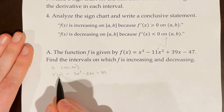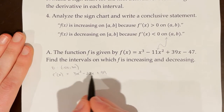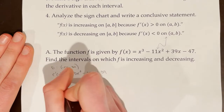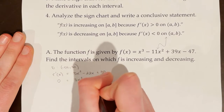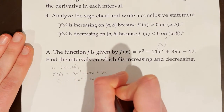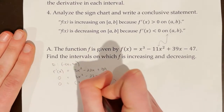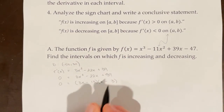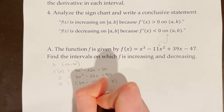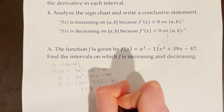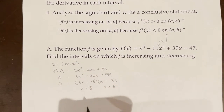Critical points can occur when f prime of x is 0 or undefined. There aren't any values of x that will make f prime of x undefined, but if we set f prime of x equal to 0, we have 0 equals 3x squared minus 22x plus 39, and we can factor that. Setting each factor equal to 0 gives x equals 13 thirds and x equals 3. These are both critical numbers.